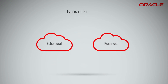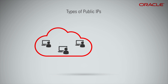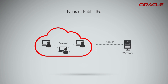There are two types of public IPs. Ephemeral — think of it as temporary and existing for the lifetime of the instance. Reserved — think of it as persistent and existing beyond the lifetime of the instance it's assigned to. You can unassign it and then reassign it to another instance whenever you like.